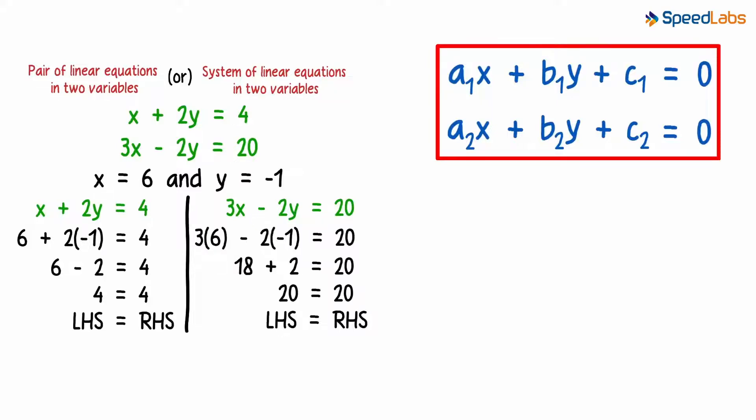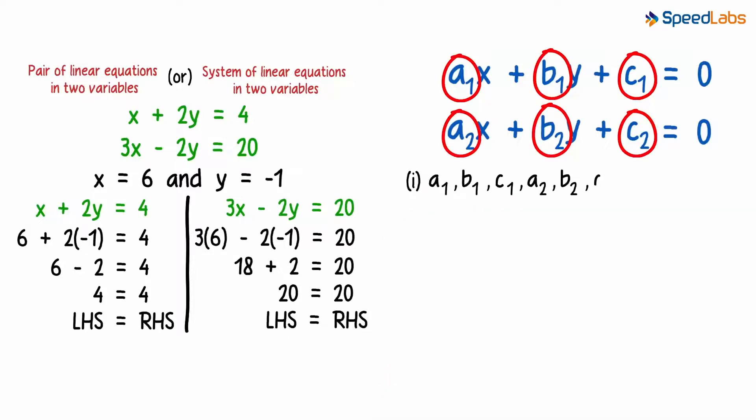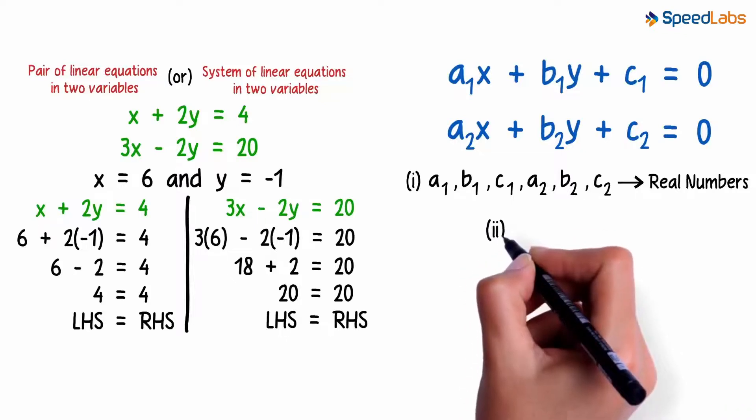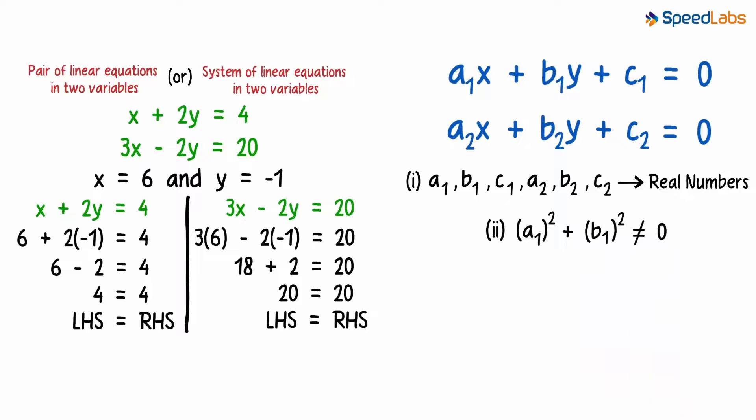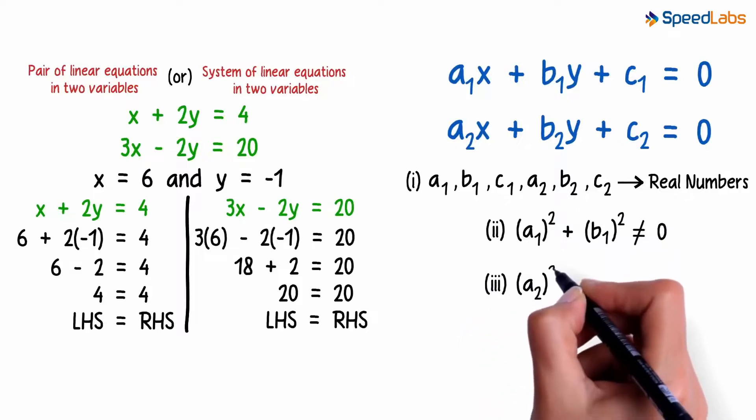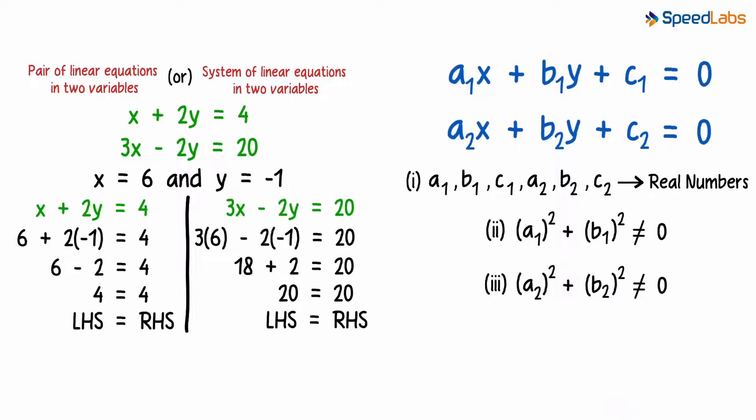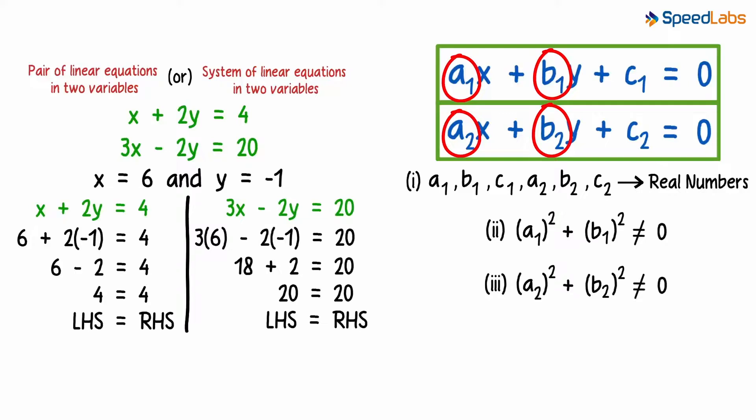And what about the conditions? The first condition would state that all these constants are real numbers. And there would be two more conditions. a1 squared plus b1 squared will not be equal to 0. And a2 squared plus b2 squared will also not be equal to 0. It's because in each equation, both these coefficients cannot be 0 together. At least one has to be non-zero.